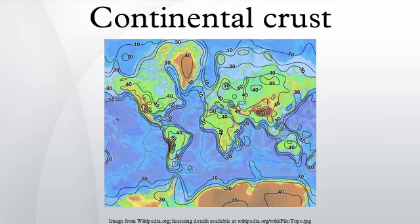The oldest intact crustal fragment is the Acasta Gneiss at 4.01 Ga, while the oldest oceanic crust is from the Jurassic. Continental crust and the rock layers that lie on and within it are thus the best archive of Earth's history.